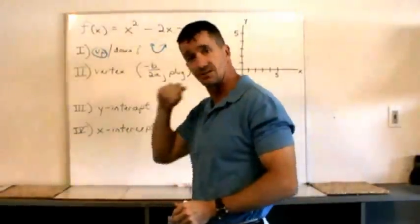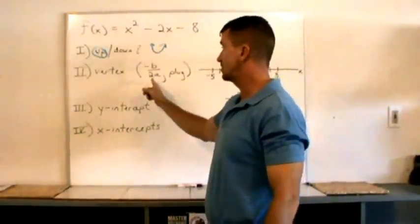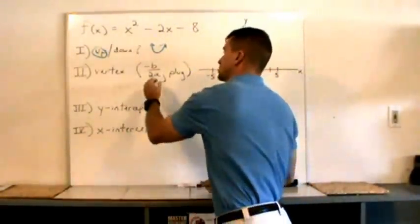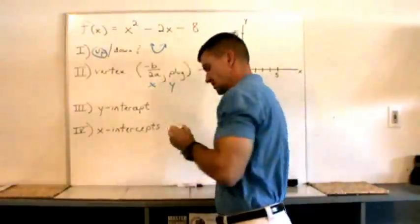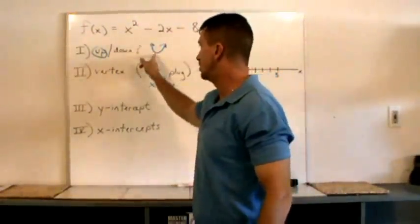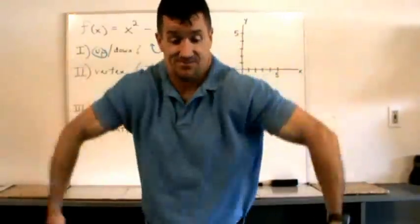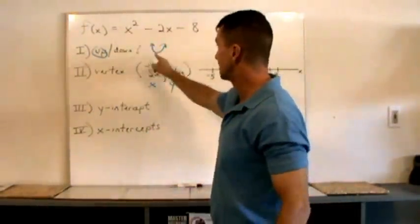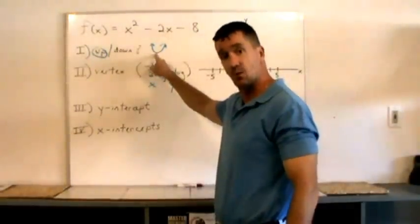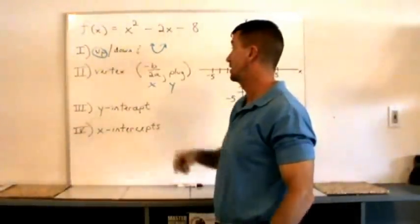Second thing, we're gonna talk about the vertex. Define the vertex. Your xy-coordinate of the vertex. The vertex is the absolute lowest point on the parabola if it's like this, or it's the absolute highest point if it's like this. So in this example, it's gonna be the absolute minimum point, the lowest point on that parabola.